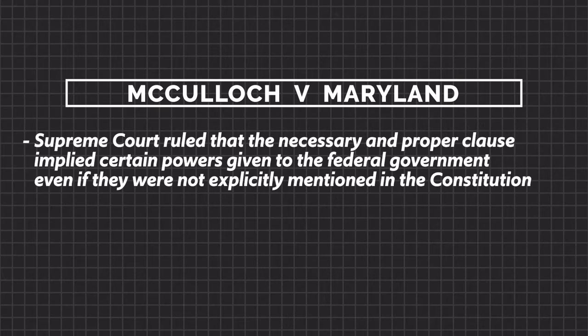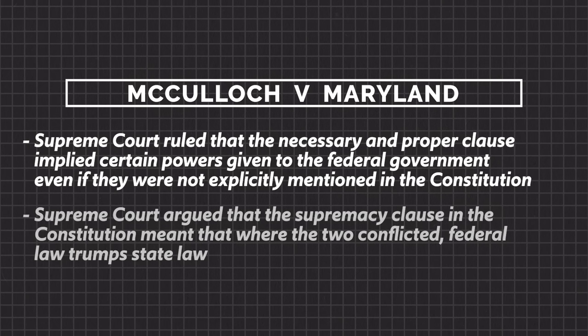Let's look at two Supreme Court cases that have weighed in on the balance of power. First is McCulloch v. Maryland in 1819 — an example of the balance of power tipping in favor of federal power. The Court ruled that the Necessary and Proper Clause implied certain powers given to the federal government even if not explicitly mentioned in the Constitution. Additionally, the Court argued that the Supremacy Clause meant that where the two conflicted, federal law trumps state law.